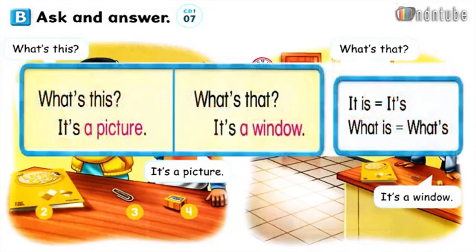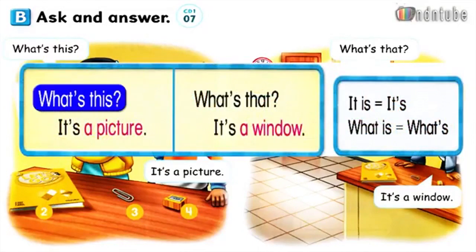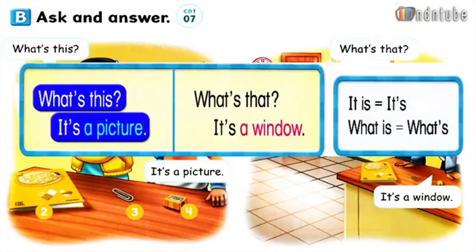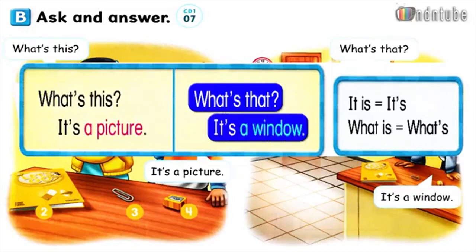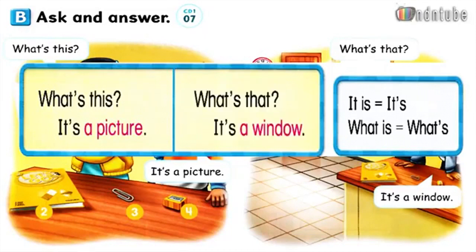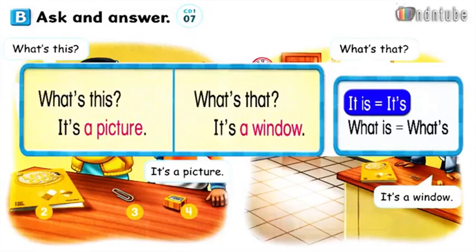Page 6 drum track. What's this? It's a picture. What's that? It's a window. It is. It's.